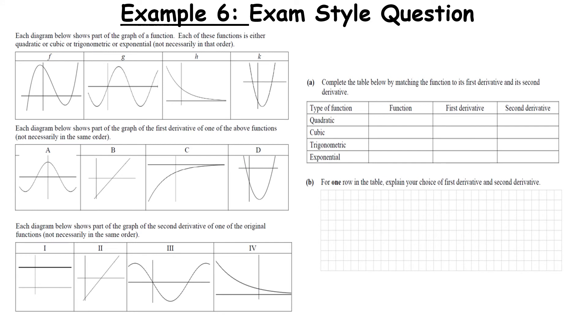So now let's take a look at first and second derivatives. Each diagram below shows part of a graph of a function. Each of these functions is either a quadratic, cubic, exponential or trigonometric. So not necessarily in that order. And then we have a second set. In each of the diagrams below shows the graph of the first derivatives of one of the above functions. Again, not necessarily in the same order. And the third set of functions we have here show the graph of the second derivatives of the original functions. But again, not necessarily in the same order. So we need to fill in this table for the type of function.